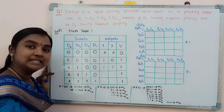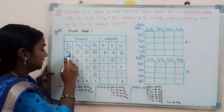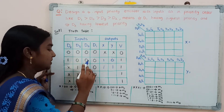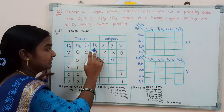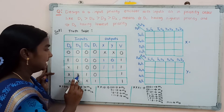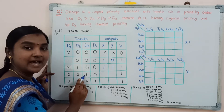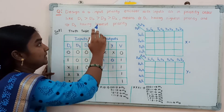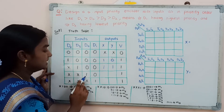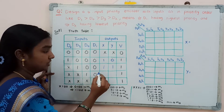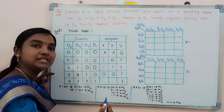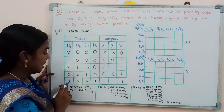Considering the next combination: d2 is don't care, d3 is don't care, d0 is 1, d1 is 0. Compared to d2 and d3, d0 has higher priority as per the given priority order. So the d0 binary code is 0, 0, and v equals 1.